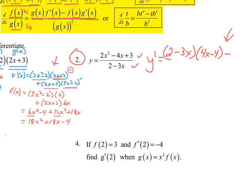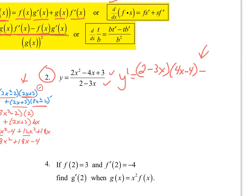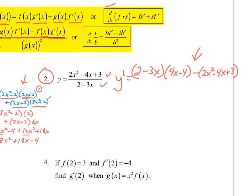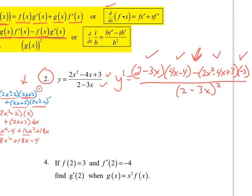Now we have the high times d low. I'm going to take the high times d low. The derivative of the low would be negative 3. So once again: low d high, less high d low, draw the line and take the denominator and square it — that's where the denominator squared will go. When simplifying, try not to expand the denominator; just leave it as is, simplify the numerator, and see if anything cancels. I'll leave that numerator simplification up to you.